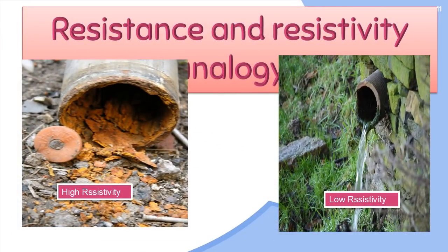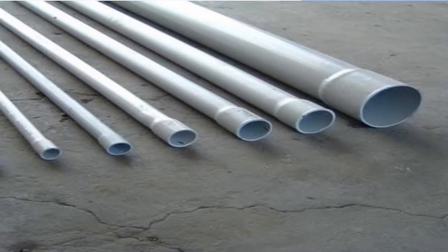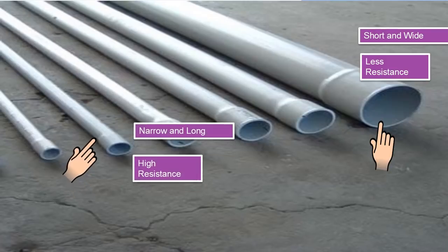Passing current through a high resistivity material is analogous to pushing water through a sand-filled pipe. When the pipes are the same size and form, the sand-filled pipe has a larger flow resistance. The presence or lack of sand on the other hand has no bearing on resistance. It also relies on the pipe's length and width. Hence, shorter and wider pipes have less resistance than narrower and longer pipes.